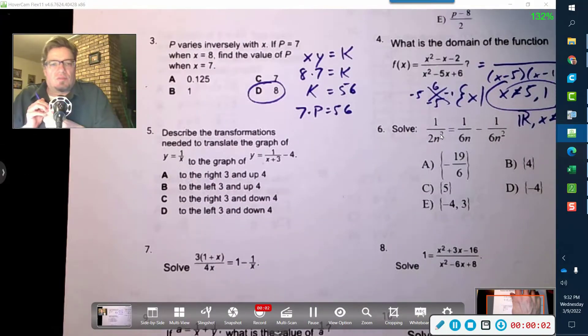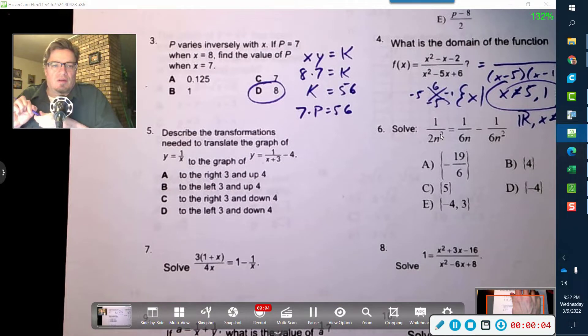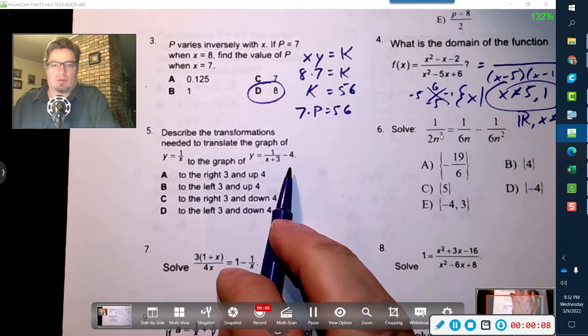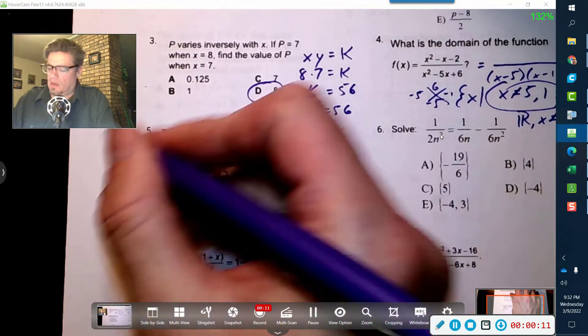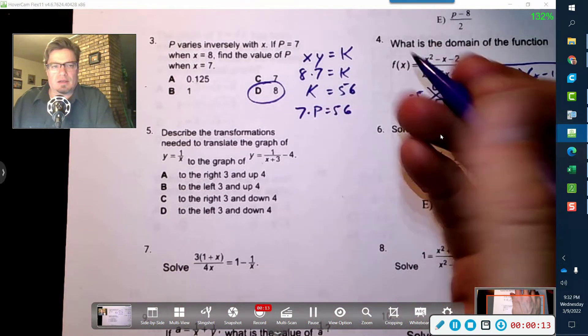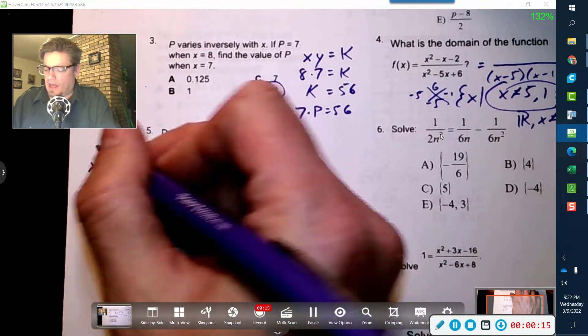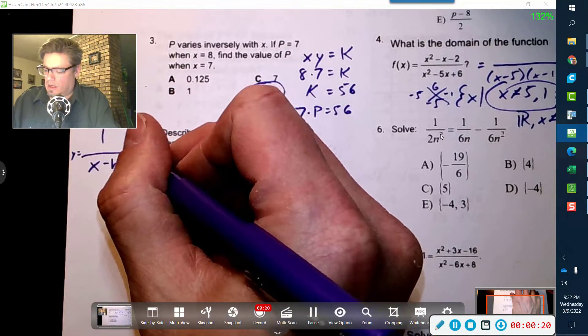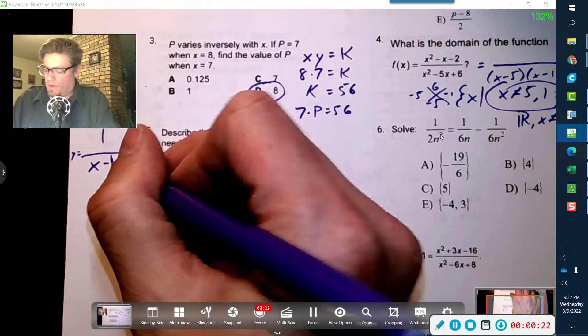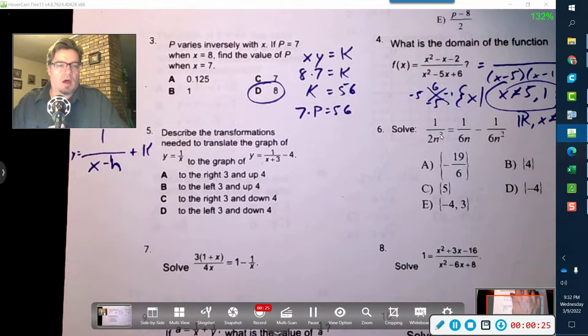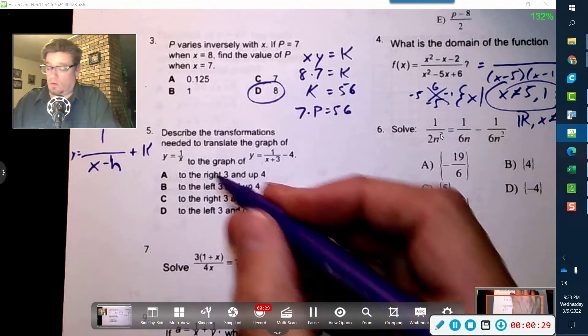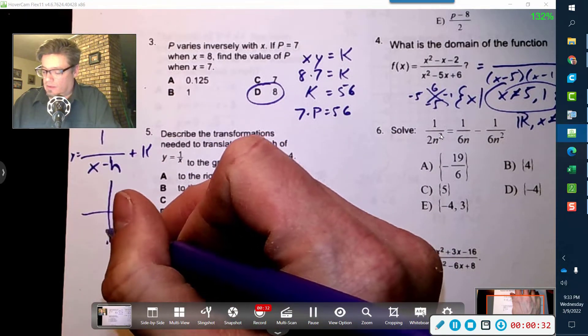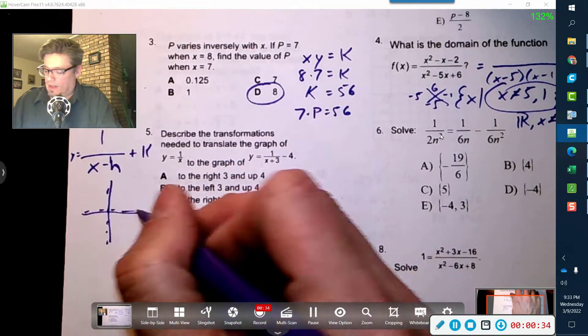Number five, describe the transformations needed to translate the graph of y equals 1 over x to this graph here. So just remember that when we did quadratics, we had an h and a k. But when you have rational functions that have a 1 over x, you have an h and a k as well, and what that means is the whole parent function, which looks like this, remember it has those asymptotes there.